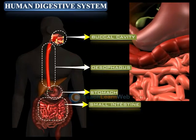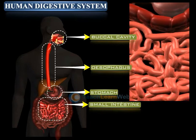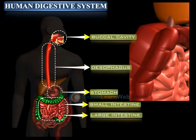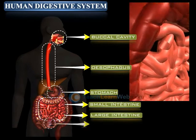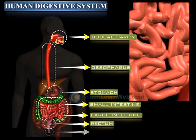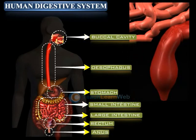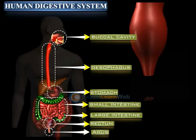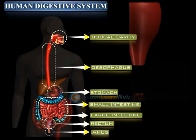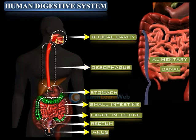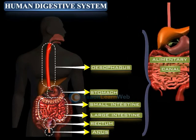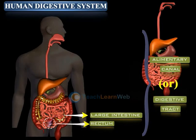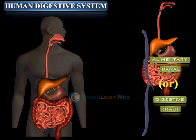The digestive system also includes the small intestine and large intestine, which ends in the rectum and finally the anus. All these parts together are called the alimentary canal. It is also called the digestive tract.